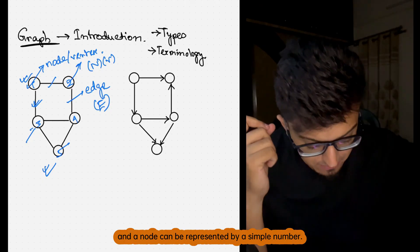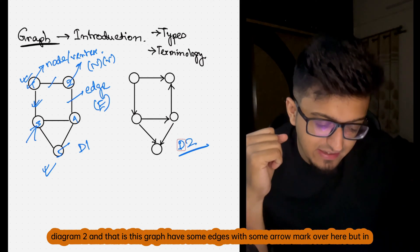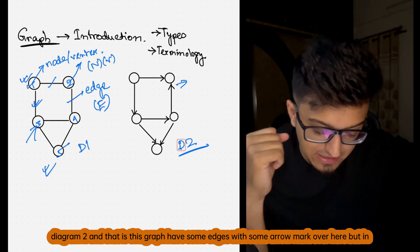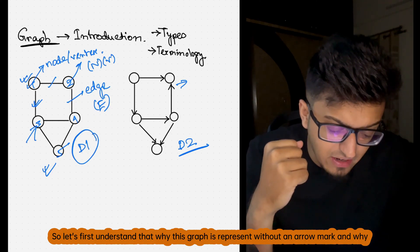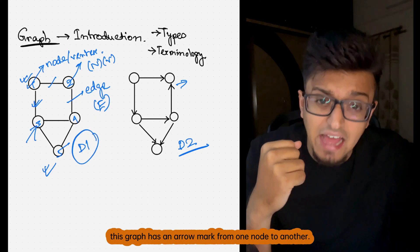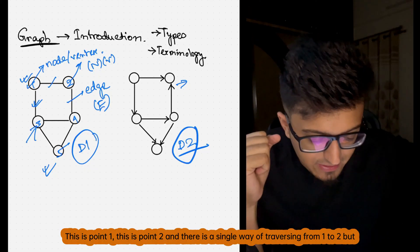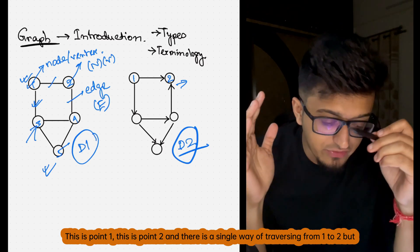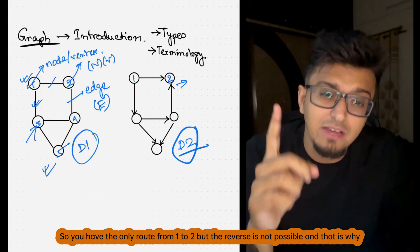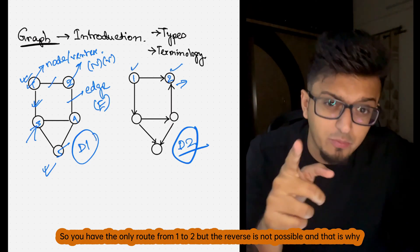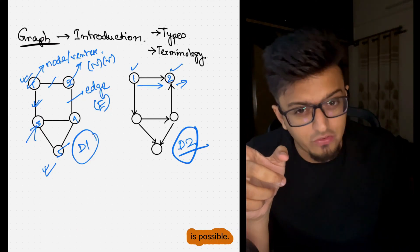If you look carefully, there is a small difference between diagram one and diagram two. This graph has some edges with an arrow mark, but in the other one there is no arrow between any of the vertices. Let's understand why one graph is represented without an arrow mark and why the other has an arrow mark. Think of it like this in a real-life scenario: this is point one, this is point two, and there is a single way of traversing from one to two but you cannot go back from two to one — it's unidirectional.